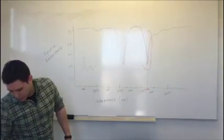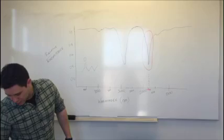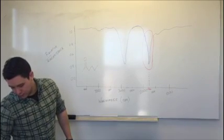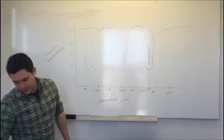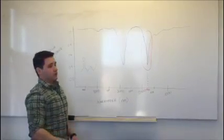So we look at our handy chart here and 1700 corresponds to a bunch of different carbonyl groups like ketones, aldehydes, esters, carboxylic acids. So we know it's one of those.